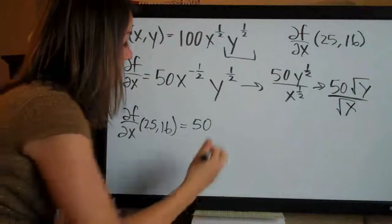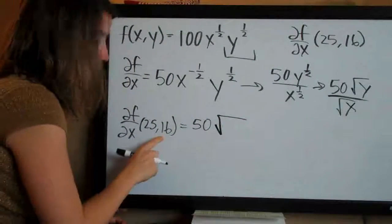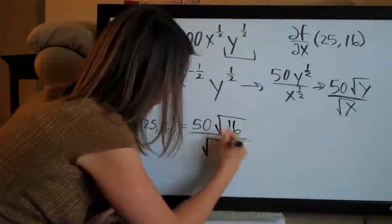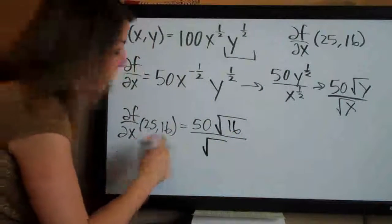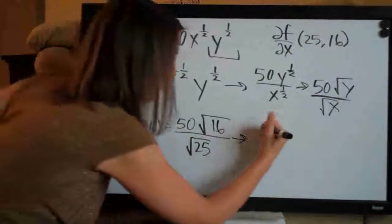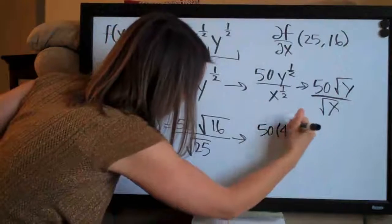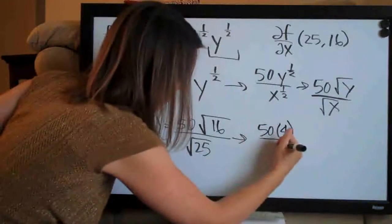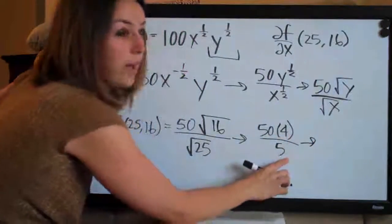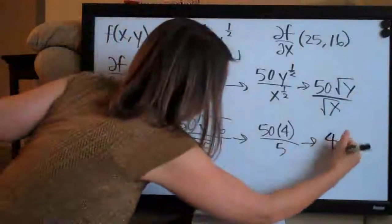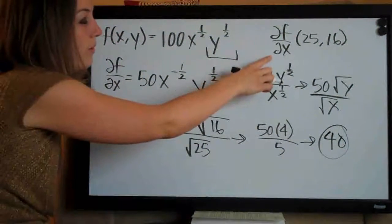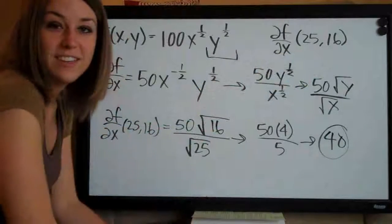So fifty times the square root of y and we're plugging in sixteen here for y over the square root of x and we're plugging in twenty-five for x. So when we do that, we'll get fifty times four over five. And fifty times four is two hundred divided by five is forty. And that is your final answer for the partial derivative with respect to x at the point (25,16).